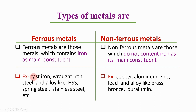Examples of ferrous metals are cast iron, wrought iron, steel, and alloys such as high speed steel, spring steel, and stainless steel. Cast iron and wrought iron contain large amounts of iron, and steel is an alloy of iron and carbon. All steels come under the category of ferrous metals because they contain iron as their main constituent.